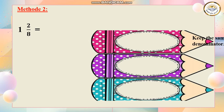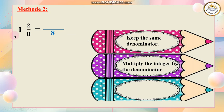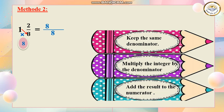Now I'm going to see another method. This method is easier and simpler than the other one. So look — if I have 1 and 2 over 8, keep the same denominator. So here I write over 8. Then multiply the integer by the denominator: I multiply 1 by 8, the answer is 8. Then I add the result to the numerator: 8 plus 2. So now I have 10 over 8.